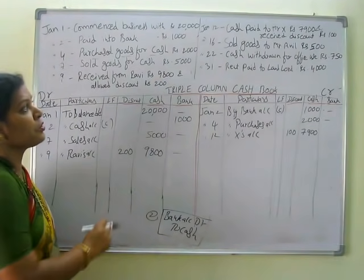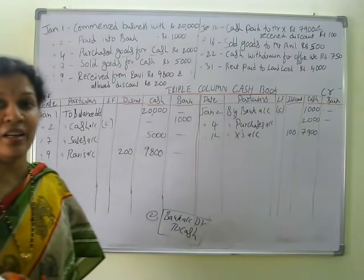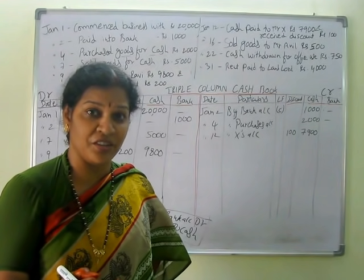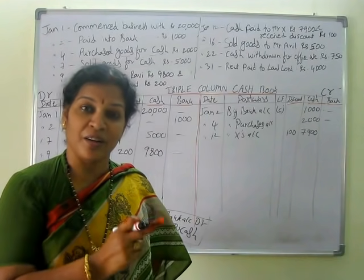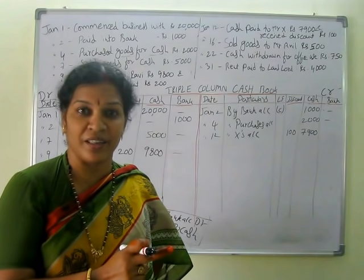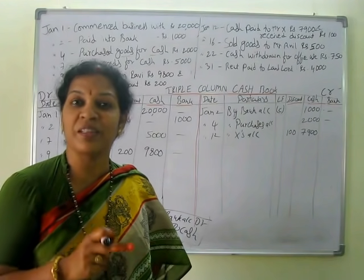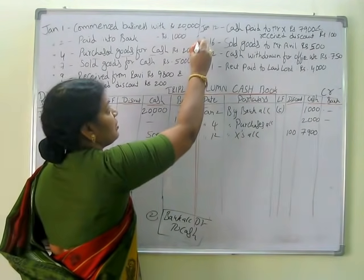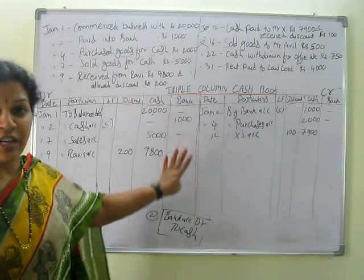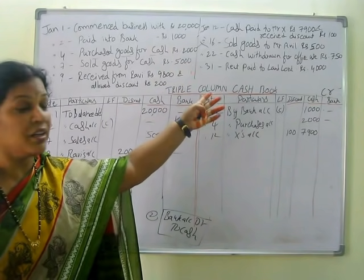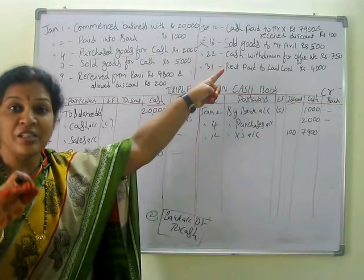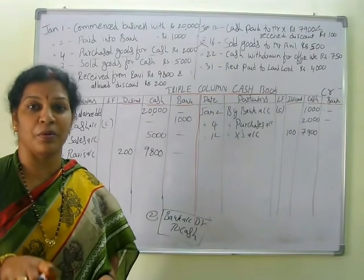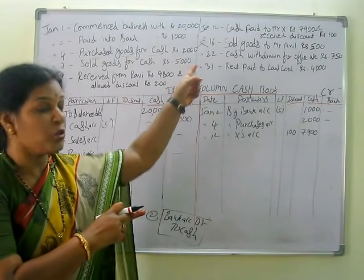Next, January 16th: sold goods to Mr. Anil. Is there any cash? No, cash is not there. Also a name is mentioned — Anil — which means it is a credit transaction. Credit transactions do not appear in the cash book, so we will ignore it. That goes to the sales book. Credit sales will be in the sales book, but not in the cash book.